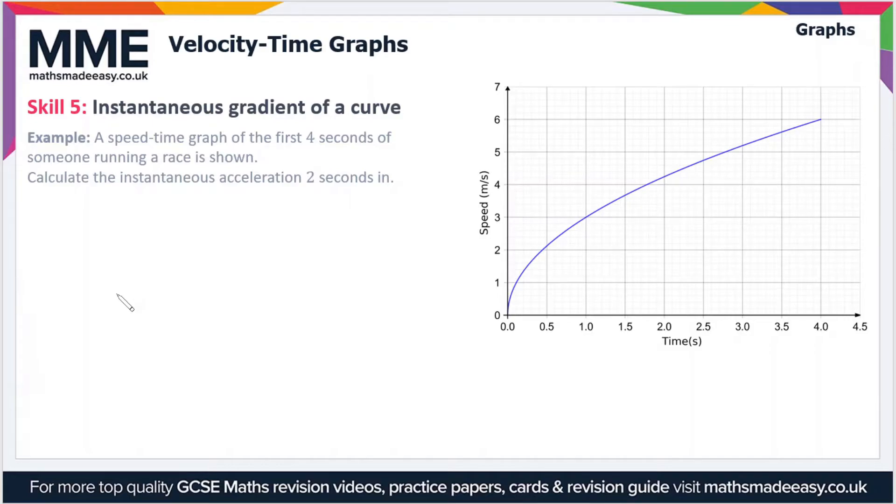To work this out, first we go to two seconds and draw a straight line up. Now we need to draw a tangent to the graph at this particular point. A tangent is a line which just touches the graph at this one point here.